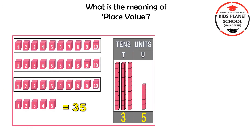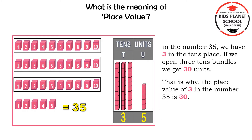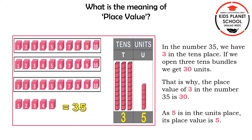Now, in the number 35, we have 3 in the tens place. If we open the 3 tens bundles, we get 30 units. That is why the place value of 3 in the number 35 is 30. As 5 is in the units place, its place value is 5.